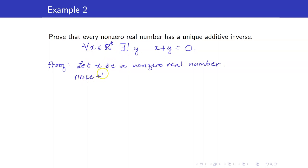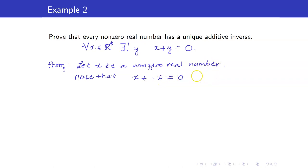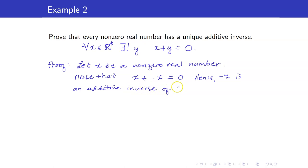Note that x plus (−x) equals 0. So I will say that negative x is an additive inverse — hence, negative x is an additive inverse of the real number x. This completes the existence part.